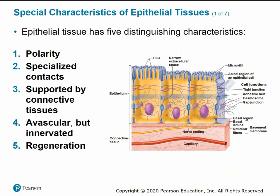Epithelial tissue has five distinguishing characteristics. Number one is polarity — having opposite poles, meaning an apical or top region and a basal region at the bottom of the epithelial tissue, so distinct top and bottom regions. Second is specialized contacts — cell junctions like tight junctions and desmosomes form these continuous sheets of epithelial tissue. Third, epithelial tissue is supported by an underlying layer of connective tissue that helps bind it and keep it attached.